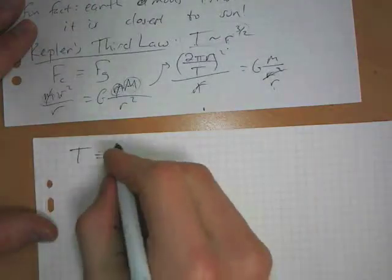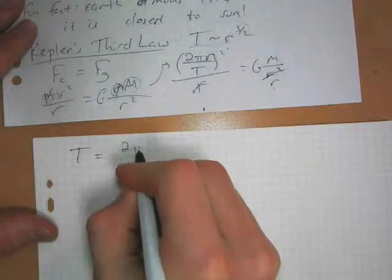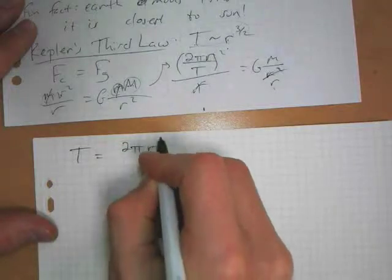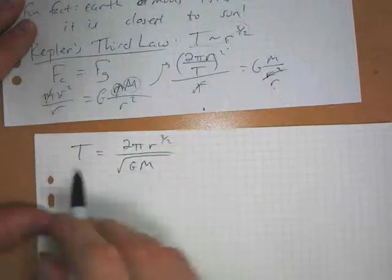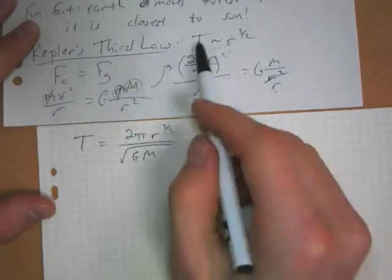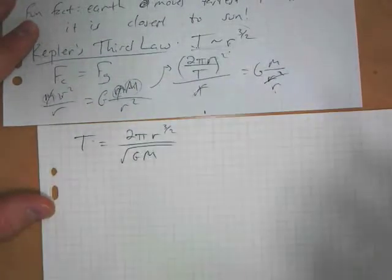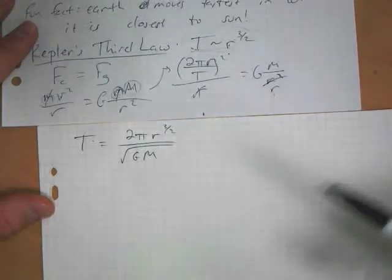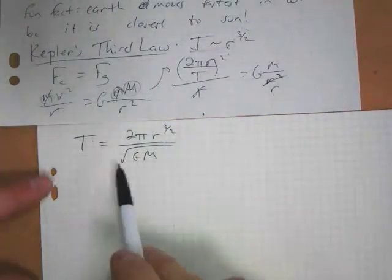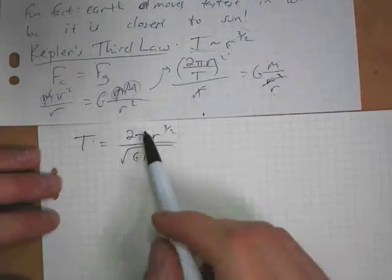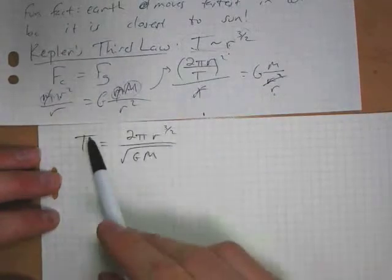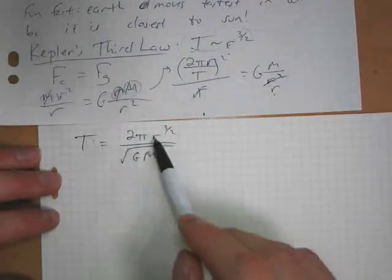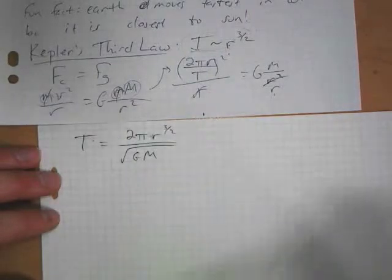is equal to two pi times r to the three halves over the square root of g times m. So Kepler just figured out this proportionality, but using Newton's law of gravitation and centripetal force, we can derive the exact value of the constant as two pi over root gm. And so,